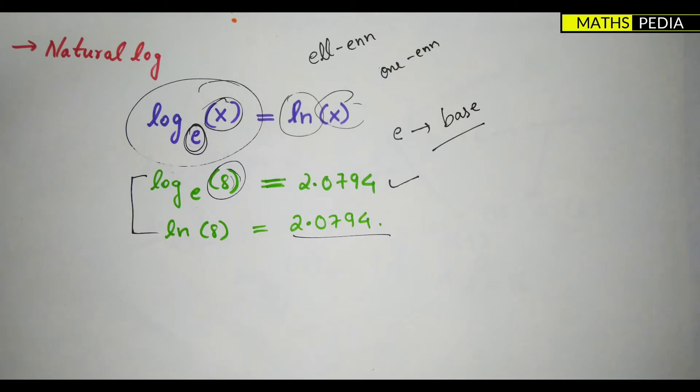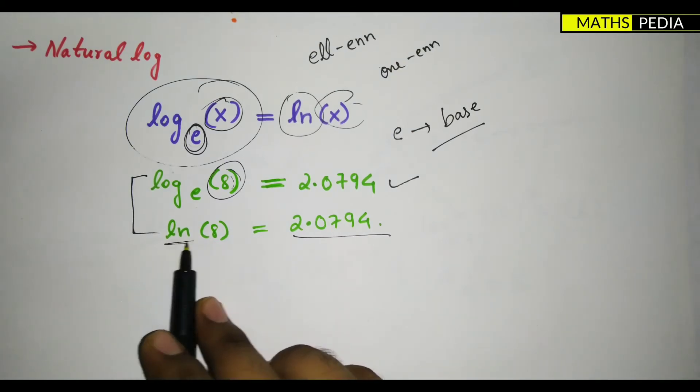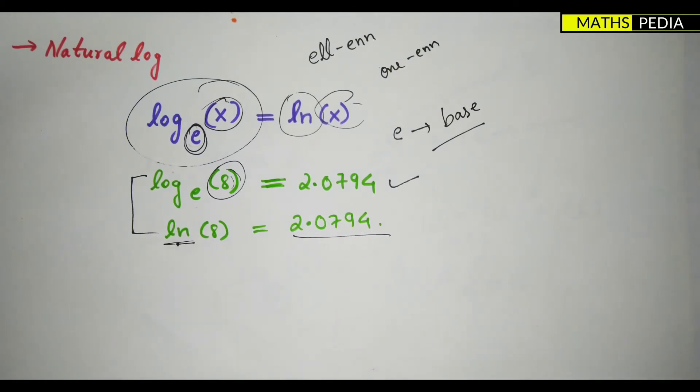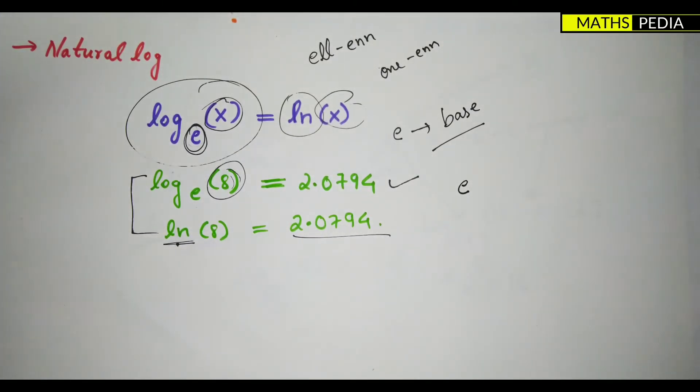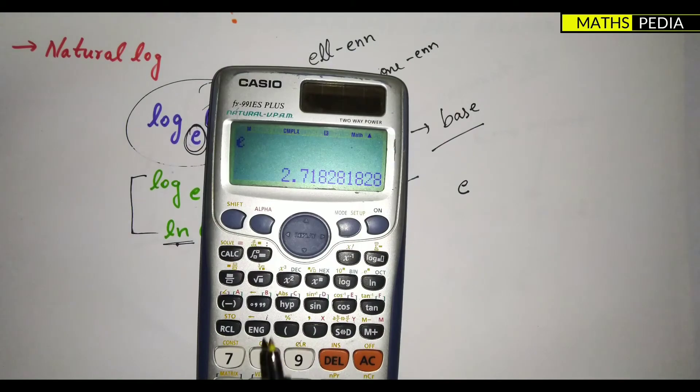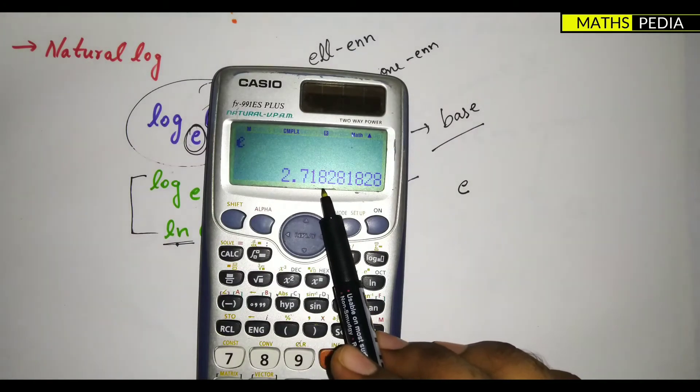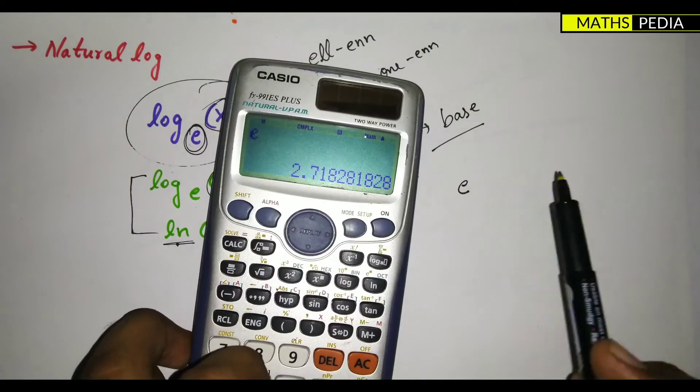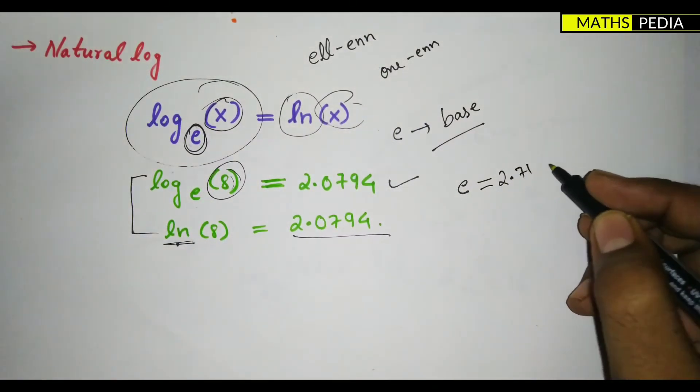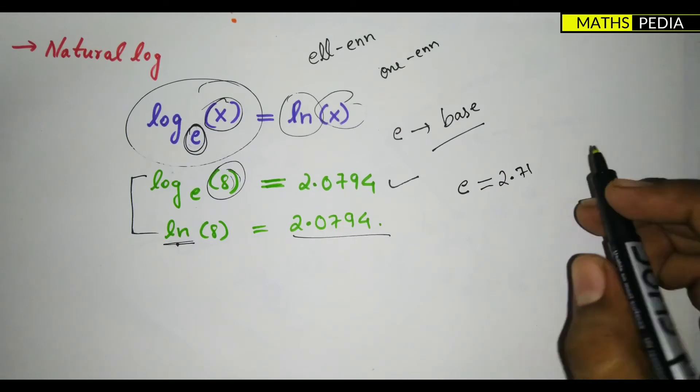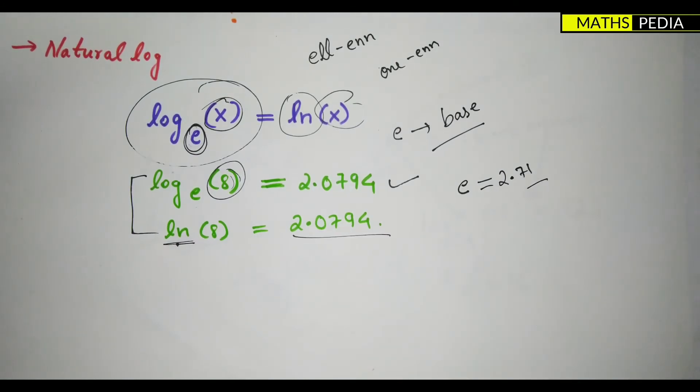So whenever ln option comes, that means the base will remain as e itself. Now what is the value of e? You can just see over here, e value is 2.71828 and so on. So basically 2.71828, something like that. The value of e is given as this.